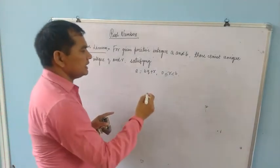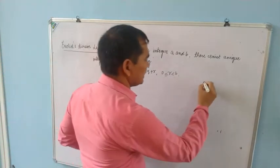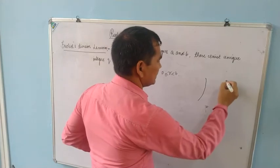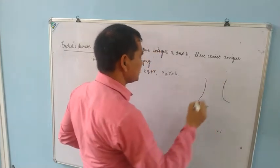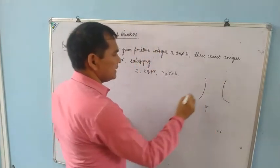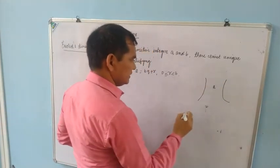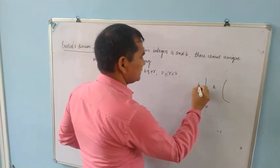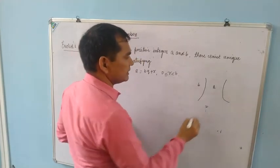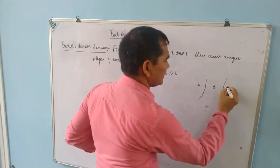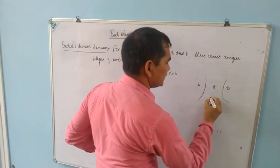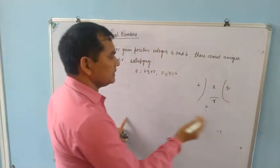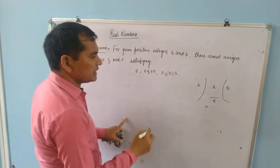In another way, we can relate this to what we studied in previous classes. Let A be the dividend, B be the divisor, Q be the quotient, and R be the remainder.